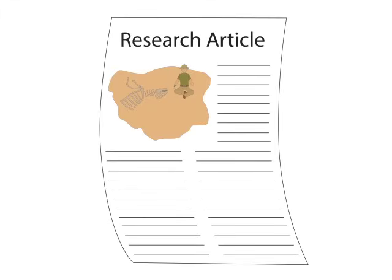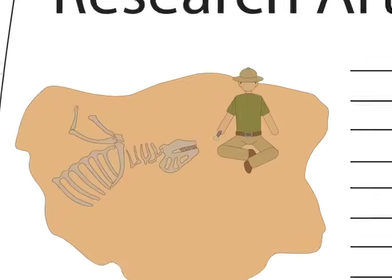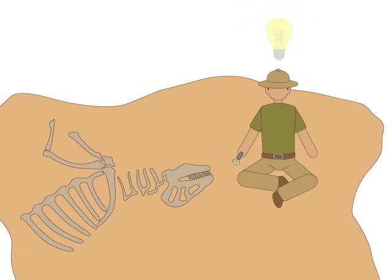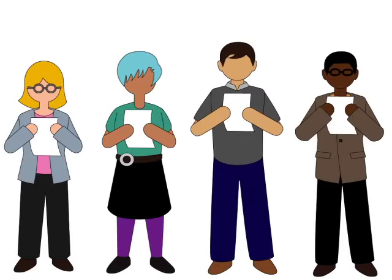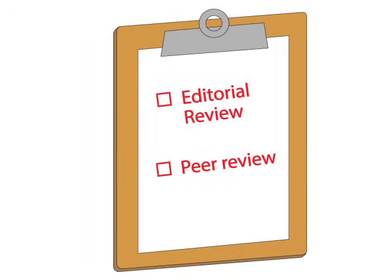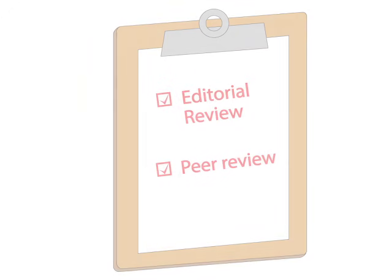First of all, the article reports a scholar's research practice and findings, and it's written with an audience of other researchers in mind. Finally, in order to be published and accepted by the scholarly community, the article must pass several quality tests. The most important of these tests is called peer-review.